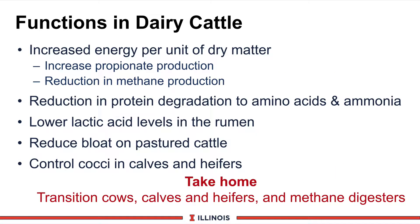What functions will rumensin or monensin have in dairy cattle? First, it will increase energy output per unit of dry matter. It increases propionate production, one of the key VFAs in the rumen, and it reduces methane losses — that gas that's burped up and contributes to the greenhouse effect. Second, it reduces protein degradation in the rumen to amino acids, meaning less ammonia formation and more amino acids available for dairy cattle for lactation or other functions.